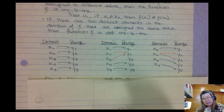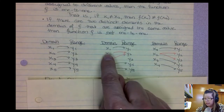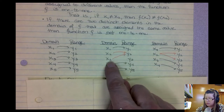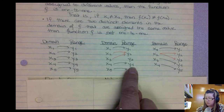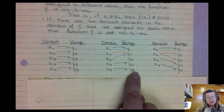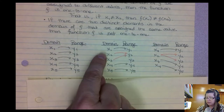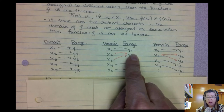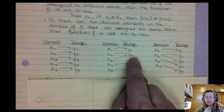Let's look at another example. x1 goes to y1, x2 goes to y2, x3 goes to y2, x4 goes to y4, and x5 goes to y5. The problem is you have two different x's going to the same y, and therefore it's not a one-to-one. It is a function — it's just not a one-to-one function.